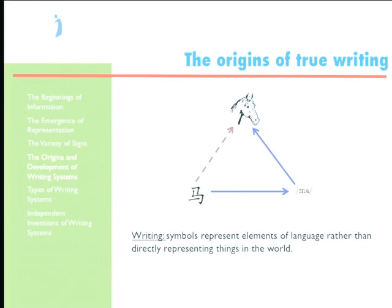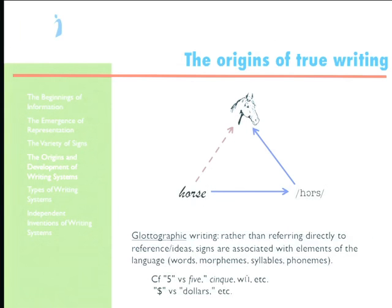In Chinese, the word for horse is 'mǎ.' You represent that word with a symbol that represents that word and then refers to horses indirectly via that word. These can be thought of as glottographic writing — glotto from the Greek for language — writing that represents language rather than referring directly to things in the world. So the numeral five represents the number five directly, whereas the written word 'five' represents the spoken form, which represents the number five. We have a dollar sign that represents dollars directly; we can also write the word 'dollars,' which represents the word, which represents dollars.